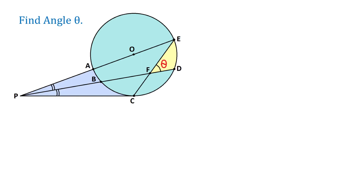In this figure, we have a circle with the center at point O. Outside the circle, we have point P and two equal angles. We can call one of these angles CPD and the other one EPD. This side of angle CPD is tangent to the circle, and this side of angle EPD passes through the center.